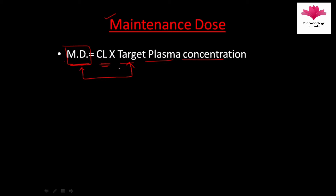Maintenance dose is the dose which, when repeated at a specific interval, maintains the target plasma concentration. So maintenance dose maintains the target plasma concentration. It needs to be repeated at specific intervals so that as much drug as is being eliminated is being provided back, in order to maintain the target plasma concentration.